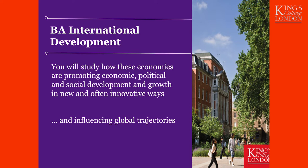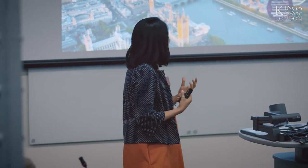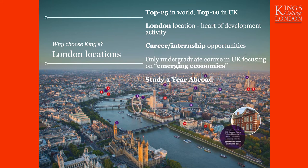Just to situate our international development program within the King's context — you would already have gotten a flavor of how interdisciplinary King's is across its own faculties. It is a huge university with a strong reputation and ranking in academics, teaching, and research. We are ranked top 25 in the world and top 10 in the UK, varying between 4 and 7 within the UK depending on which ranking you look at. Our London location is very important for this program, particularly because we are at the heart of development activity in London — a locational advantage we use to the full potential, not just in terms of exposing our students to development activities and opportunities, but also for career and internship opportunities.